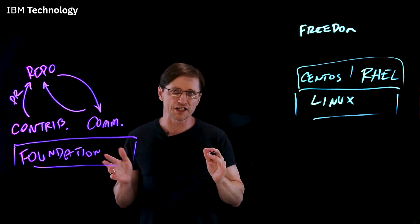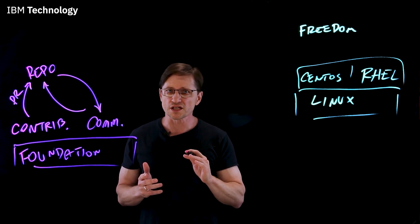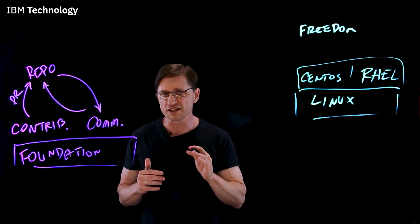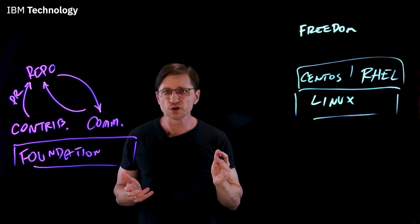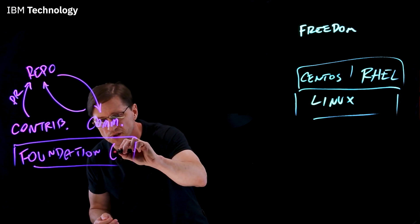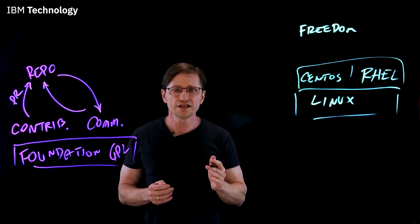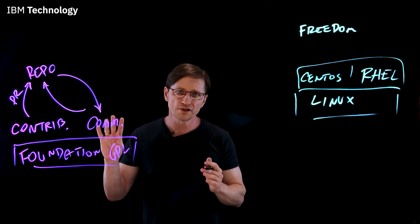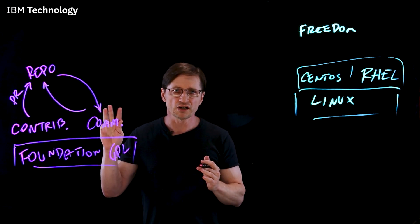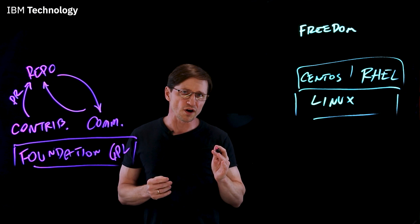This brings us to a final player: lawyers — or more accurately, the open source license that spells out how the source is going to be distributed, modified, and other things like attribution. The most common is the GPL, the General Public License. It guarantees four freedoms: the freedom to run, study, share, and modify. This includes commercial, for-profit users too.